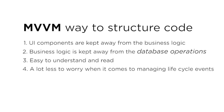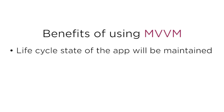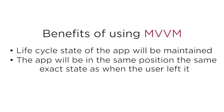For example, screen rotations, or if the user closes the app and comes back to it several hours later. If you use MVVM, the lifecycle state of the app will be maintained and the app will be in the same position, the same exact state, as when the user left it.